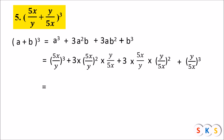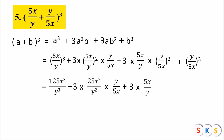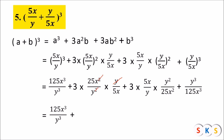Simplifying: (5x/y)³ = 125x³/y³. For the second term, 3 × (25x²/y²) × (y/5x): cancel one y and one x with the 5, giving 3 × 5 × x/y = 15x/y. For the third term, square of y/5x is y²/25x², and cancelling gives 3y/5x.